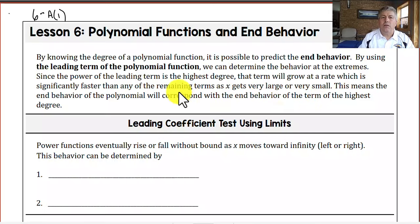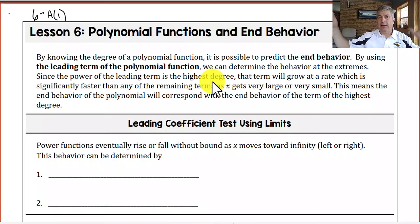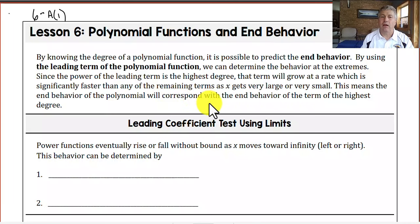By knowing the degree of the polynomial — the highest exponent, the highest term — it's possible to predict the end behavior. By using the leading term of the polynomial function, we can determine the behavior at the extremes, meaning as x goes to positive and negative infinity. Since the power of the leading term is the highest degree, the term will grow at a rate significantly faster than any other remaining terms as x gets very large or very small.